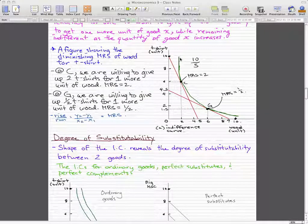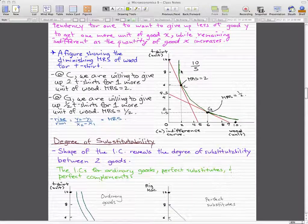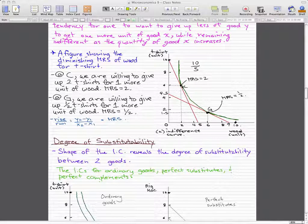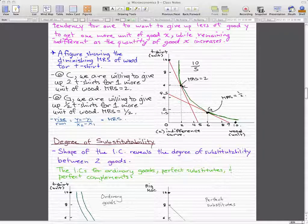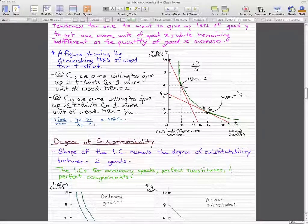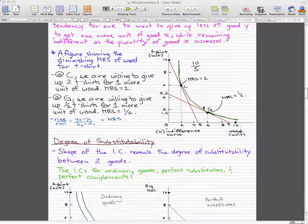This is a figure showing a Diminishing Marginal Rate of Substitution of wood for t-shirts. At point C, we are willing to give up two t-shirts for one more unit of wood, so the Marginal Rate of Substitution is two. At point G, we are willing to give up half a t-shirt for one more unit of wood, so the Marginal Rate of Substitution is one-half.